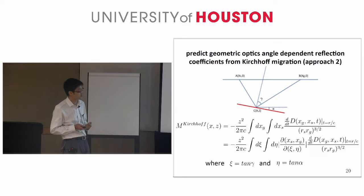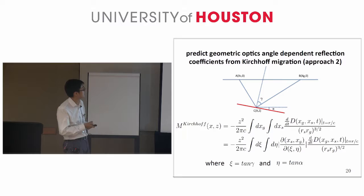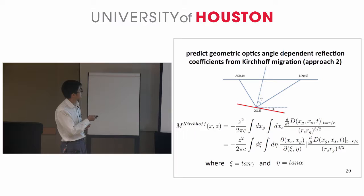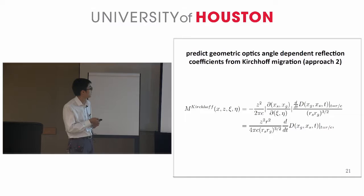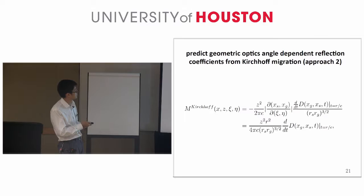We use the same geometric optics picture to get the reflection coefficient from Kirchhoff migration. This picture shows the geometric optics setup: given a source A, receiver B, and imaging point C, we can determine an incident and a dip angle. Here, gamma is the incident angle, alpha is the dip angle, and C is the tangent of the incident angle, while it is the tangent of the dip angle. In a geometric optics picture, we can arrange the Kirchhoff migration to give us an image with a variable of the incident angle, and then get a geometric optics reflection coefficient from Kirchhoff migration.